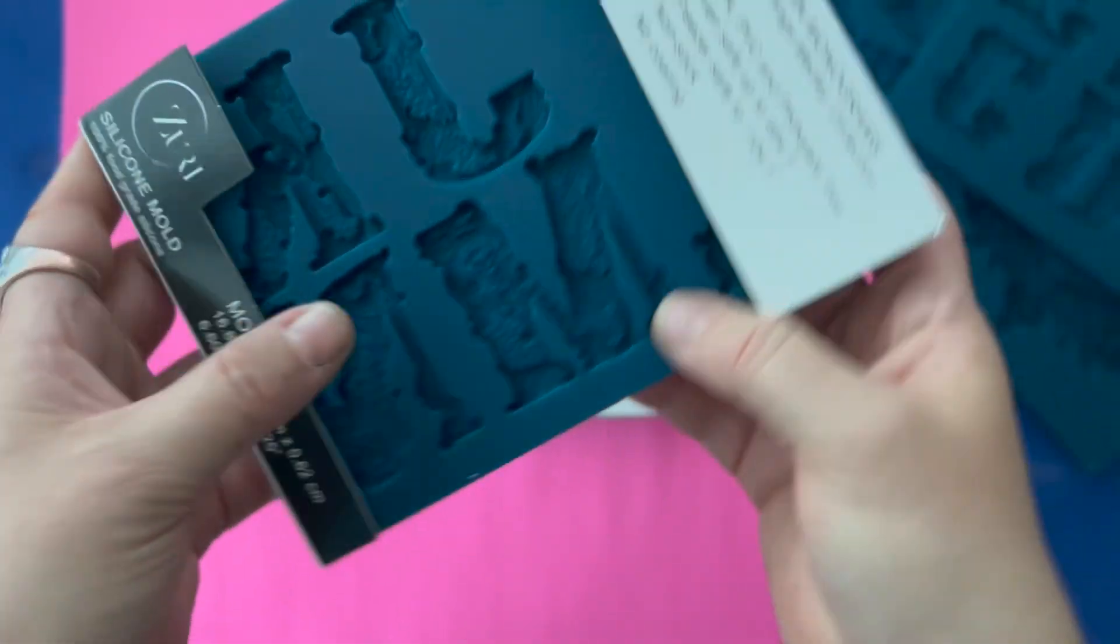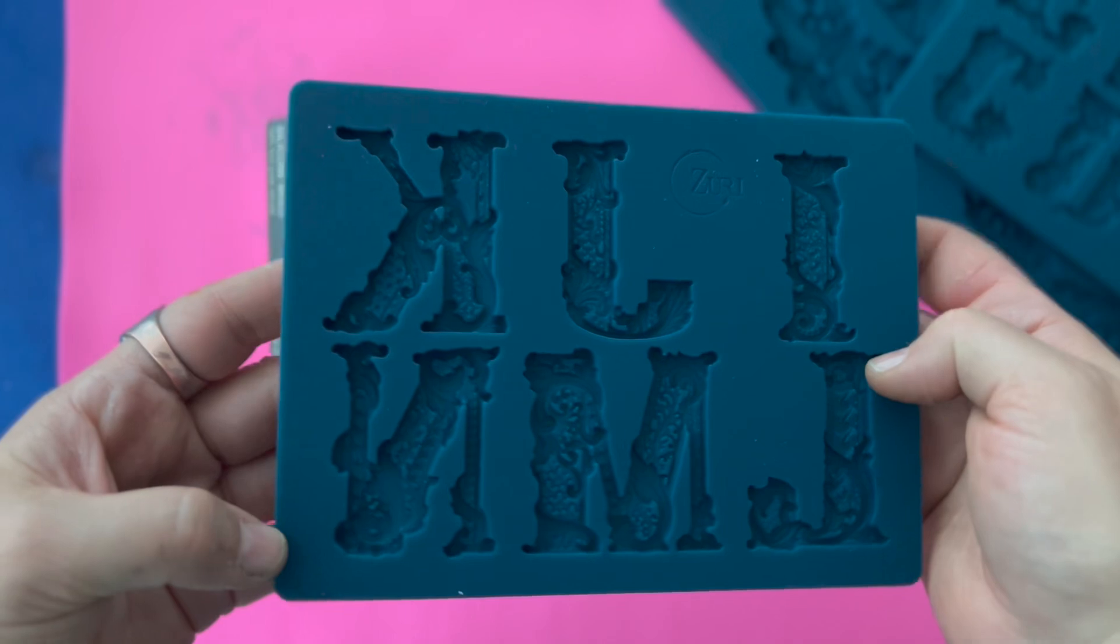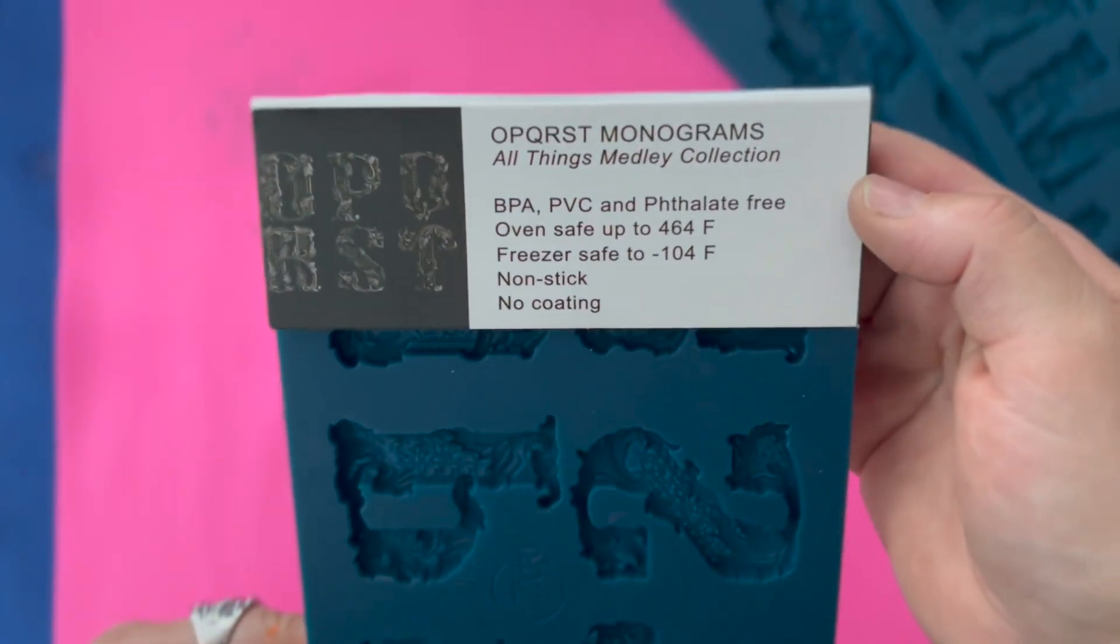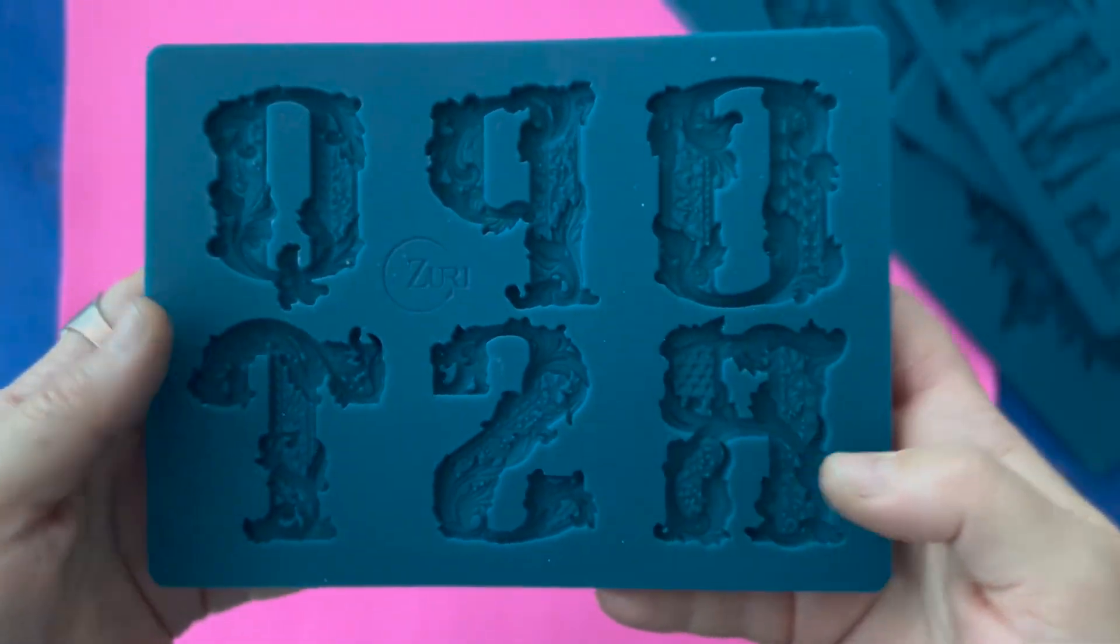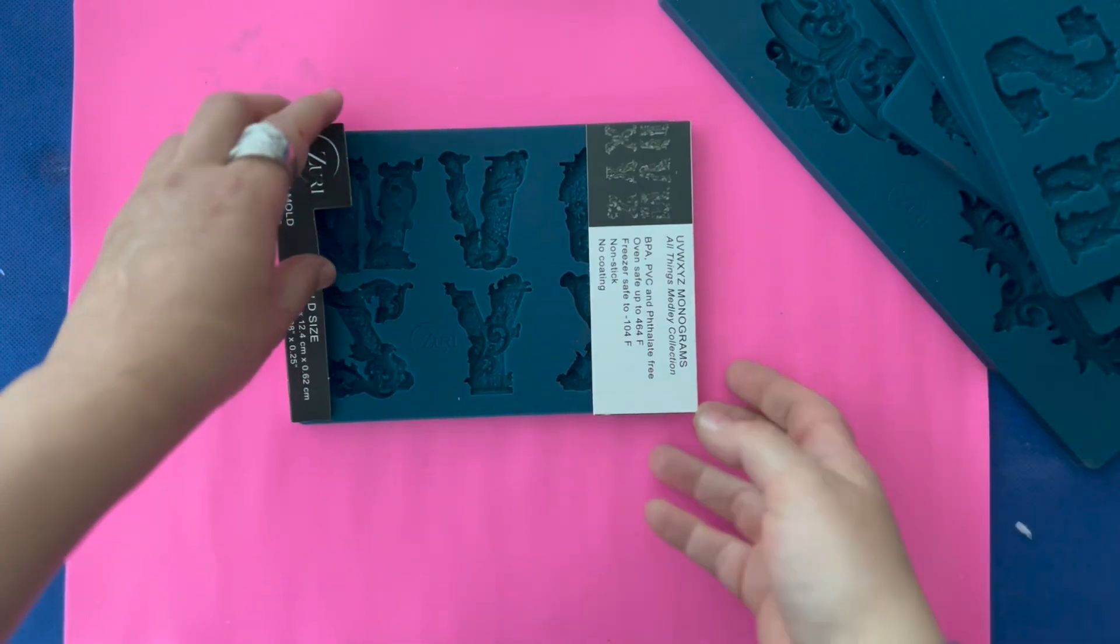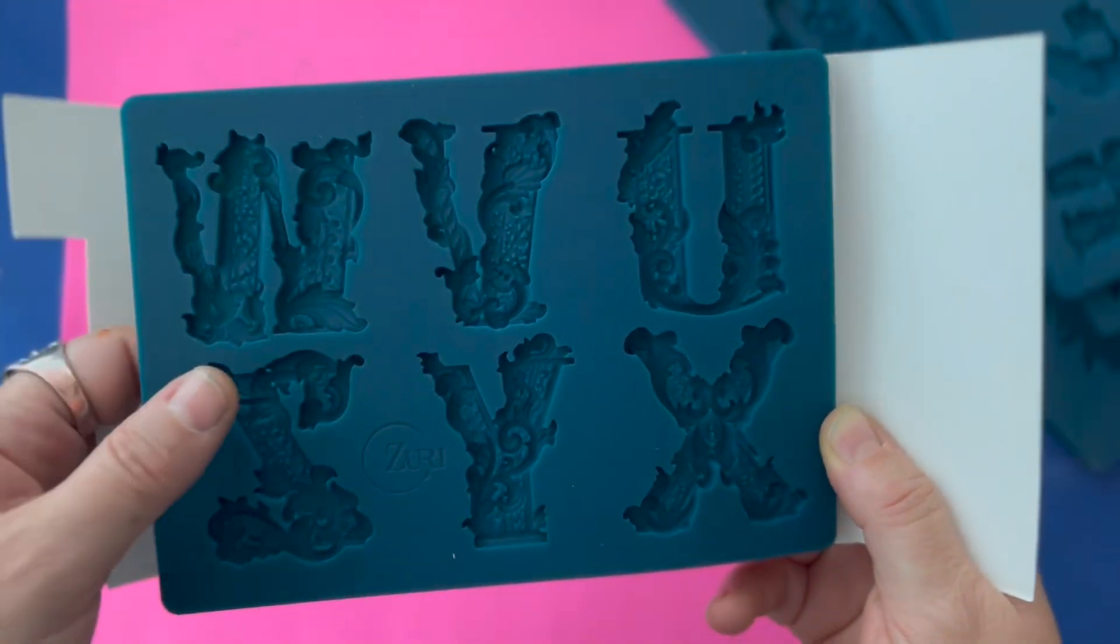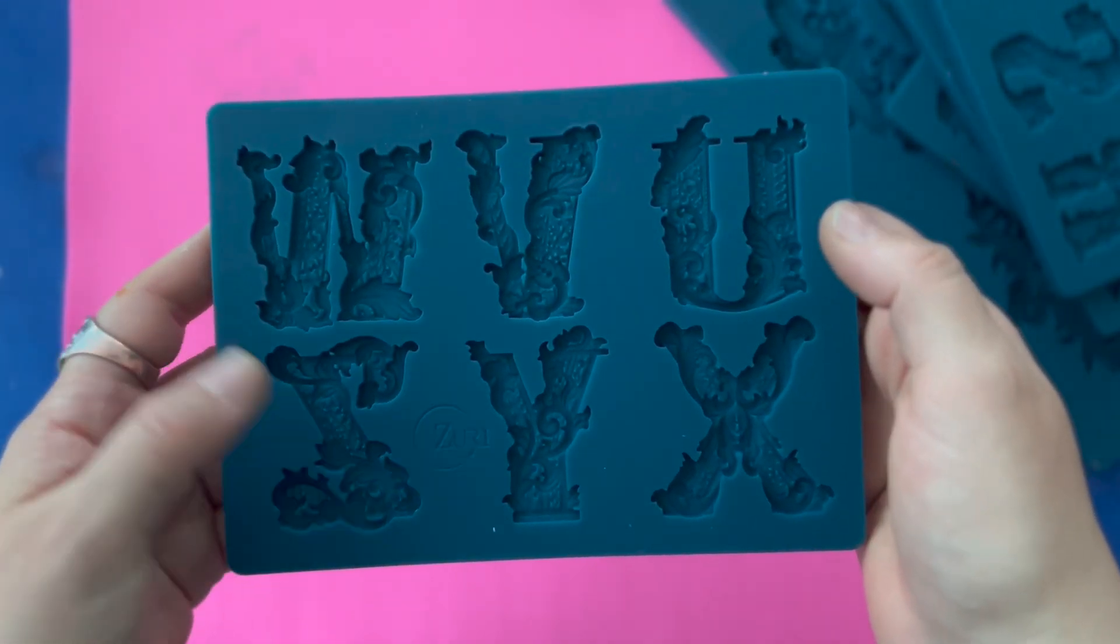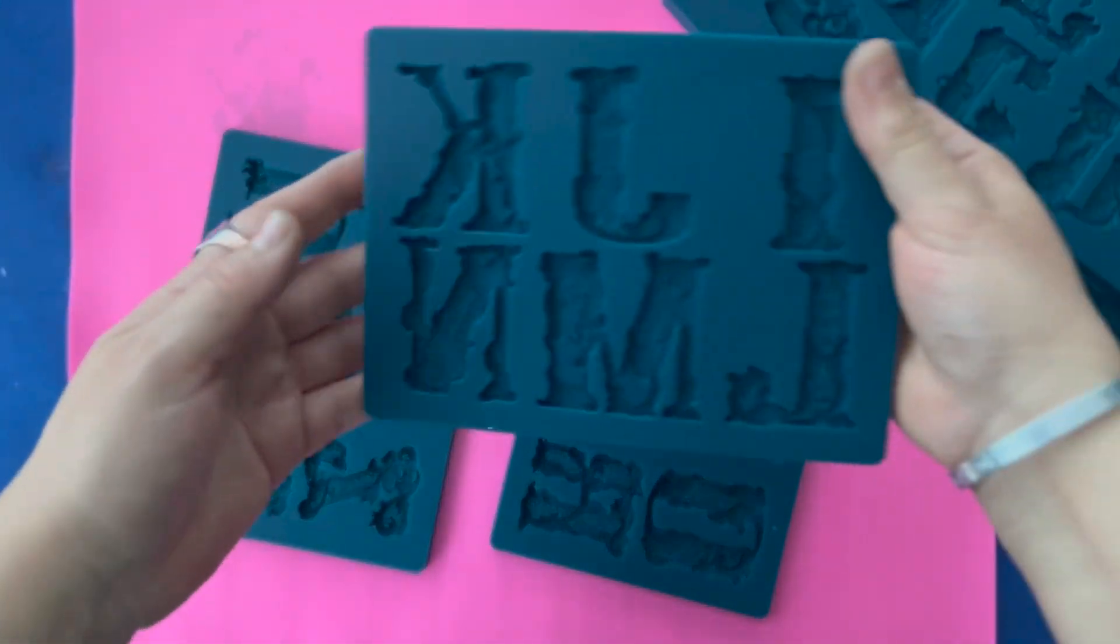Here's my next set. I'll be using the letter I to spell out Zuri. Here's O to T. So you can see I'm going to be using the letter R. And finally our letters U to Z. And I'll be using letters U and Z. Now that we've been through these molds, let's start our project.